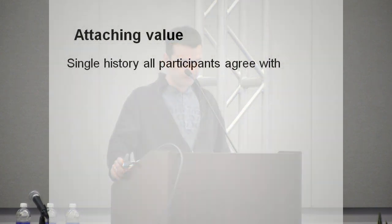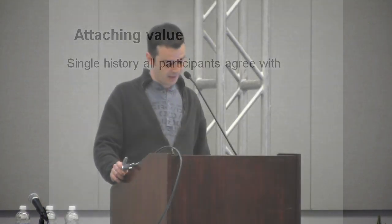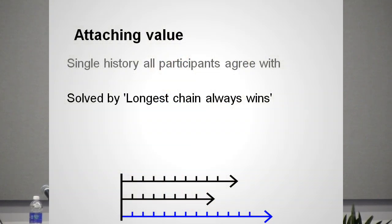This obviously requires a single history or chain of transactions for participants to agree with, because in the case of conflicting histories, the distribution of wealth would be different too. What is the current solution? How do the participants decide on which is the proper chain of events? Currently, they will always prefer the longest chain — and by prefer I mean they will broadcast it and try to extend it through mining. It is a simple, elegant solution.